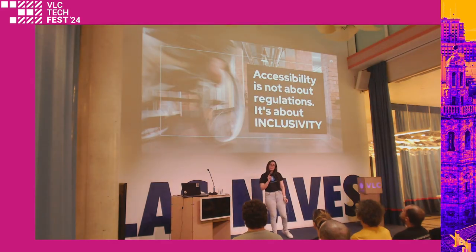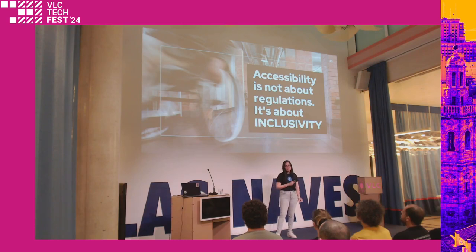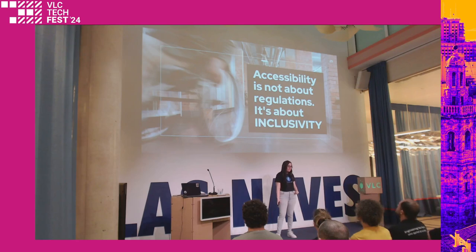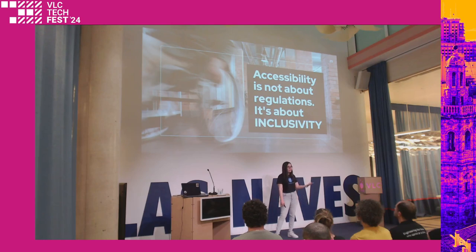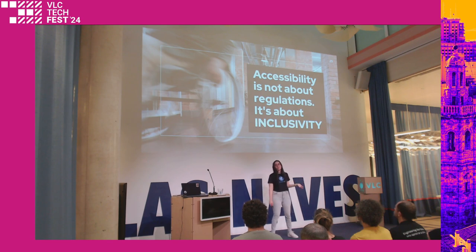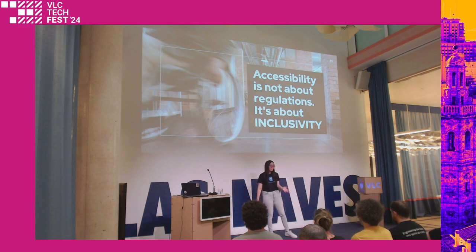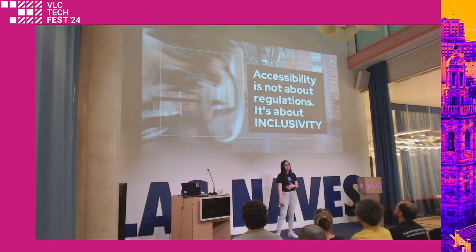Something I want to say before continuing: accessibility is not about regulation — it's about inclusivity. It's about everybody being able to use the web. Regulations unfortunately are sometimes what force us to act, because it's hard to convince a product manager without financial data. But the main focus should be making the web usable for everybody. So try to push accessibility implementation in your projects, and hopefully regulations will help you get there.